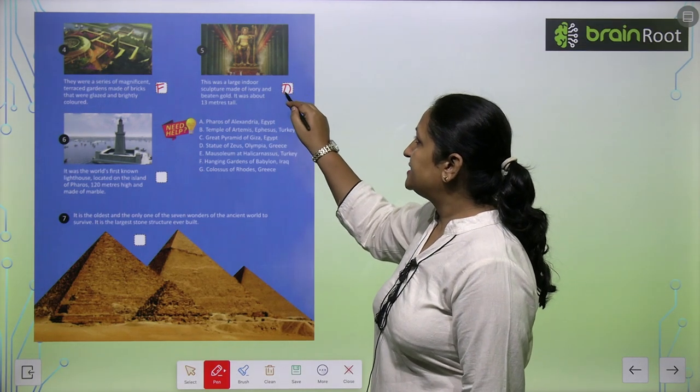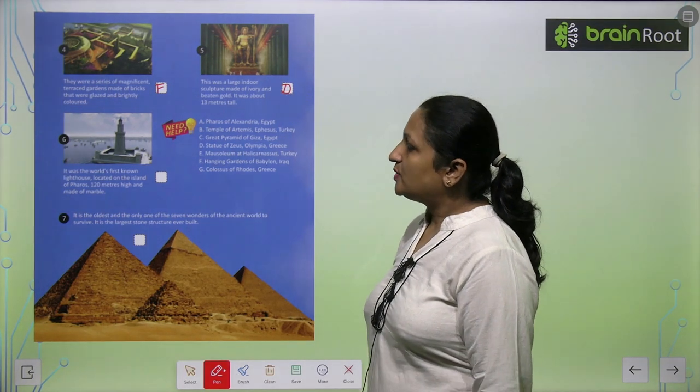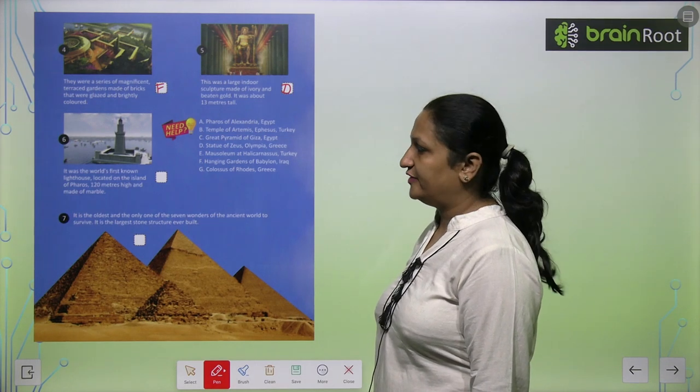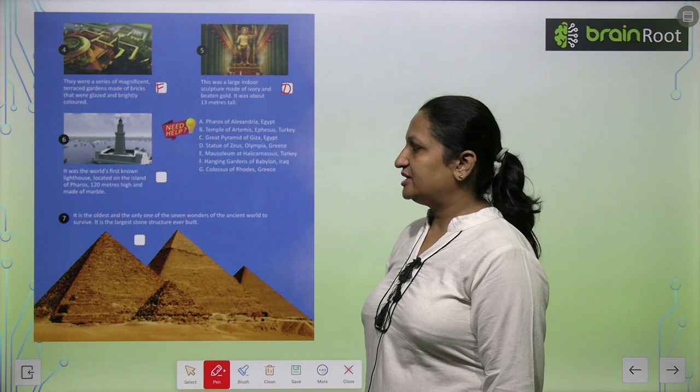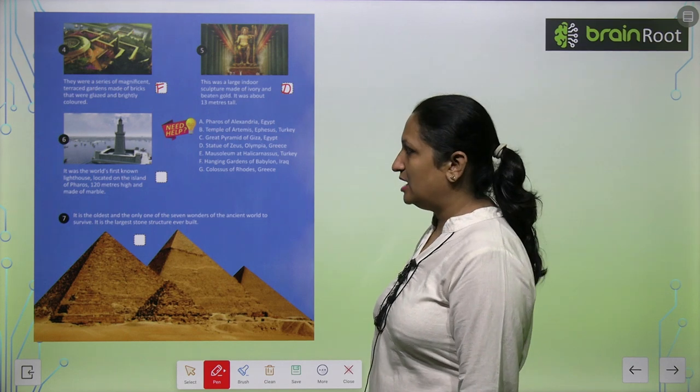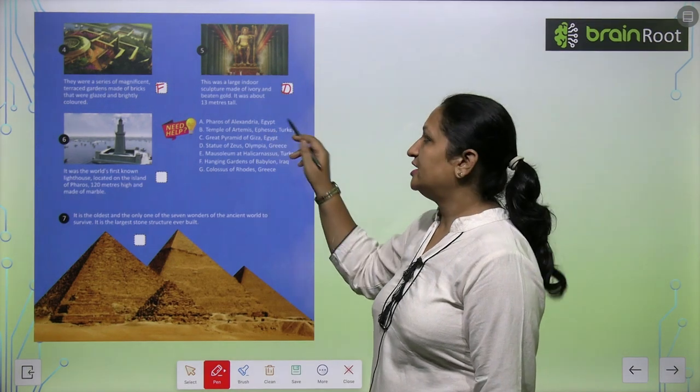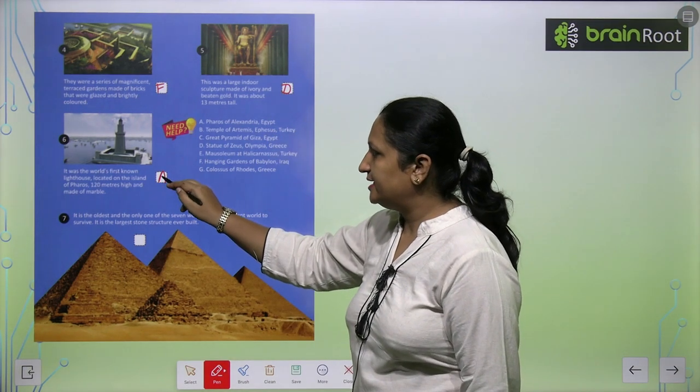It was the world's first known lighthouse, located on the island of Pharos, 120 meters high and made of marble. This is the Pharos of Alexandria, Egypt. You can write here letter A.